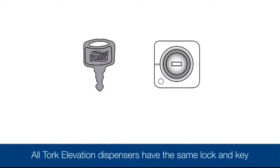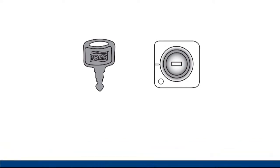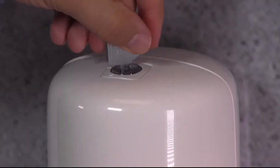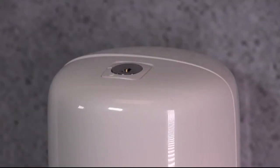All of the Torque elevation dispensers have the same lock and key. The locks can be set in key lock or push button mode. When the key is inserted and aligned with the circle as seen here, the dispenser is unlocked and can be opened just by pushing on the button.